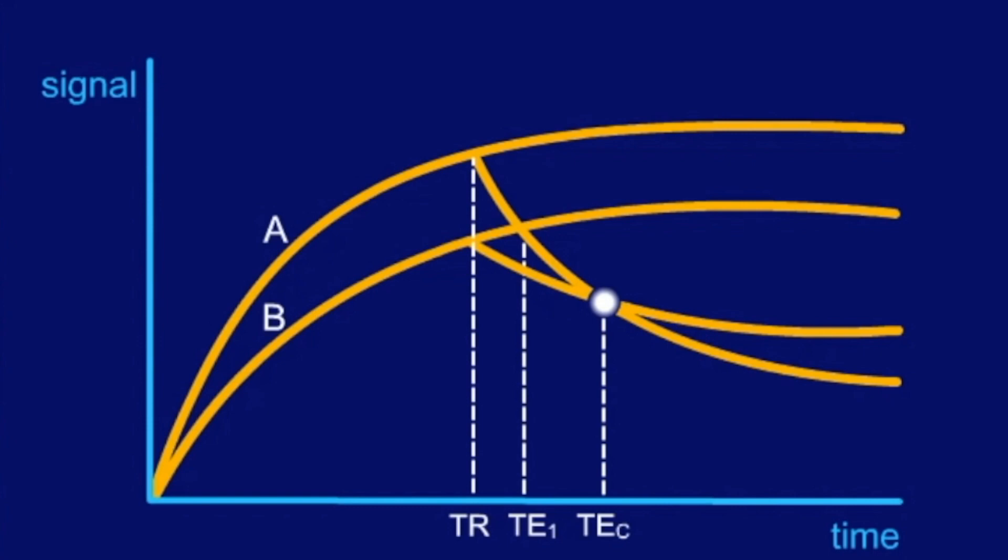Thus, you might be unlucky and choose a pulse sequence with just those imaging parameters that do not allow tissue differentiation, which is the reason for performing two different examinations with different T1 and T2 weightings. With a TE beyond the crossing point, TE2, tissue A will have a lower signal than tissue B.